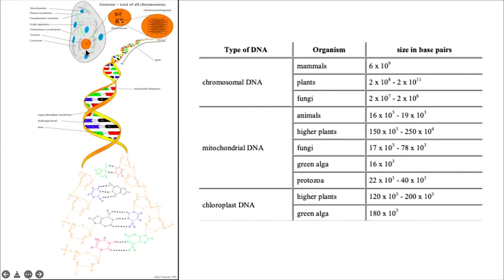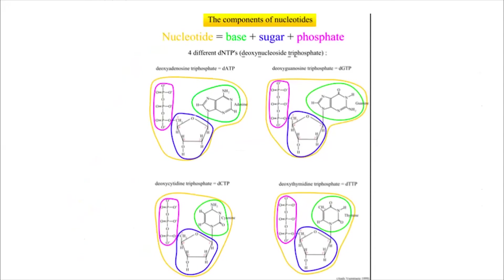The nucleus of a cell — shown in orange — contains many chromosomes. When you unwind those chromosomes, you basically have a single strand of double-stranded DNA, with two strands running anti-parallel to each other, connected by hydrogen bonding. There is a lot of DNA in cells: chromosomal DNA in mammals has about 10⁹ base pairs; plants have even more — about 10¹¹ base pairs. Mitochondrial DNA is smaller, about 10³ to 10⁴ base pairs, and chloroplast DNA is also not very long. This is the central repository of all information, transcribed and translated to make proteins, which do much of the work inside the cell.